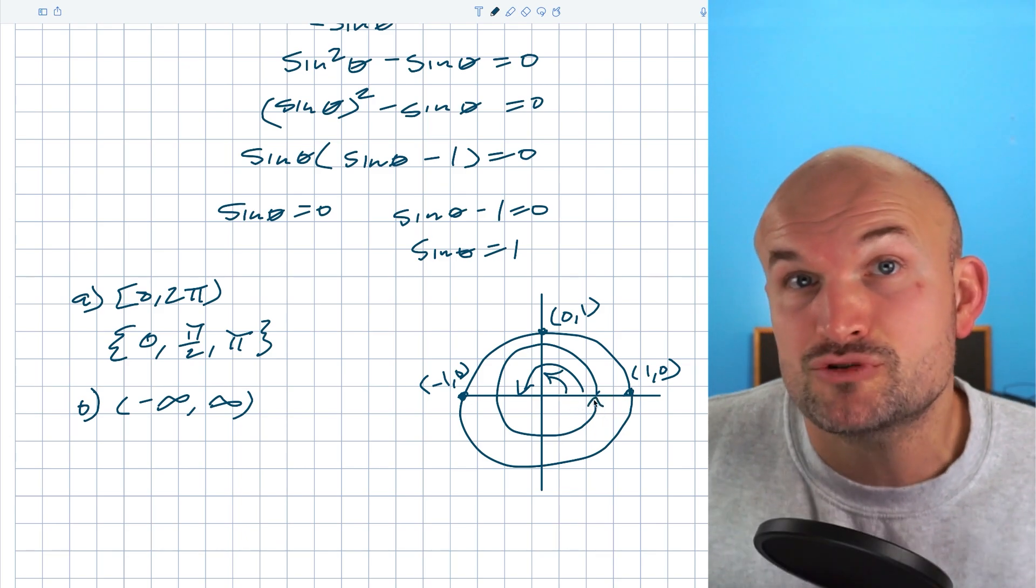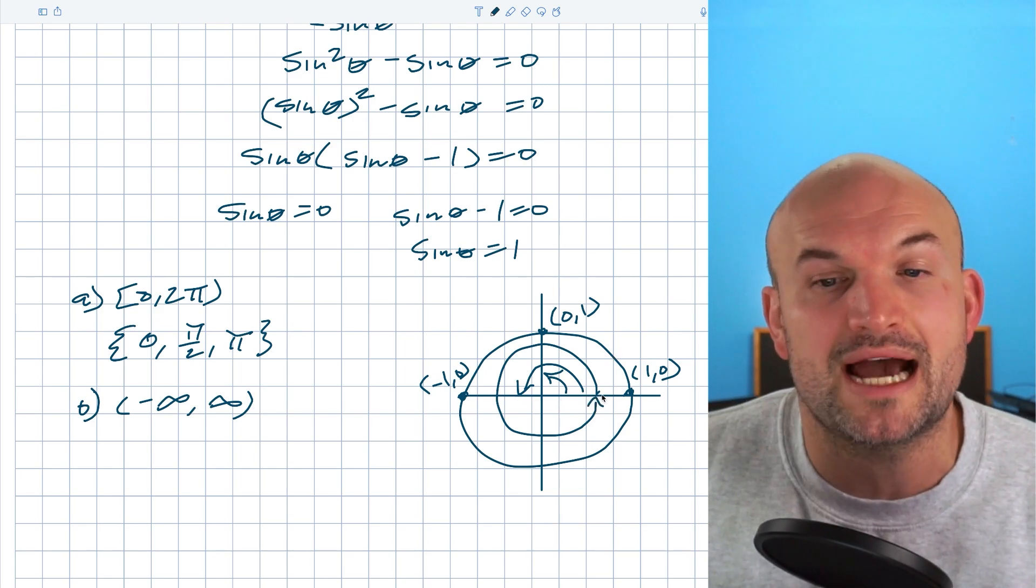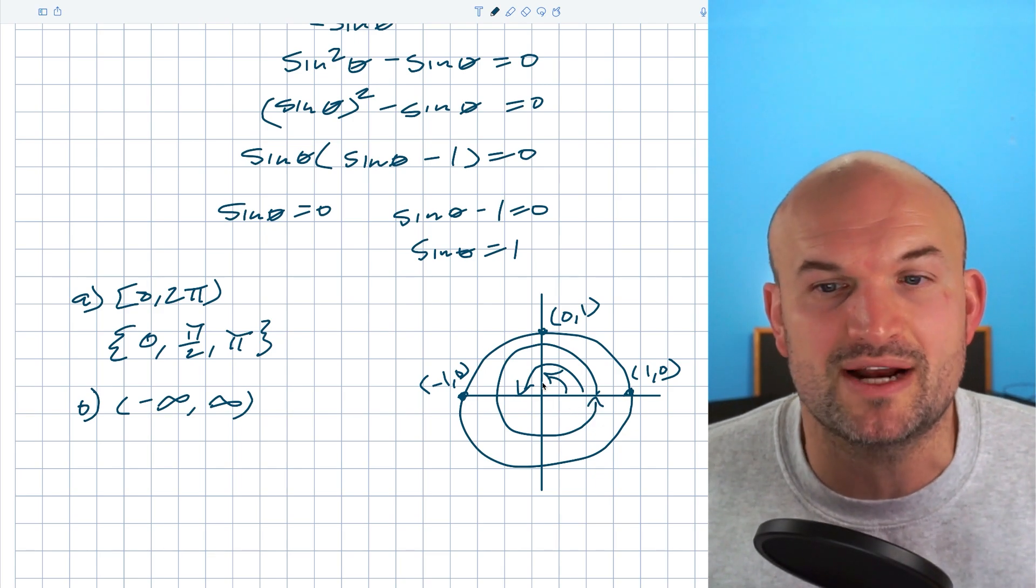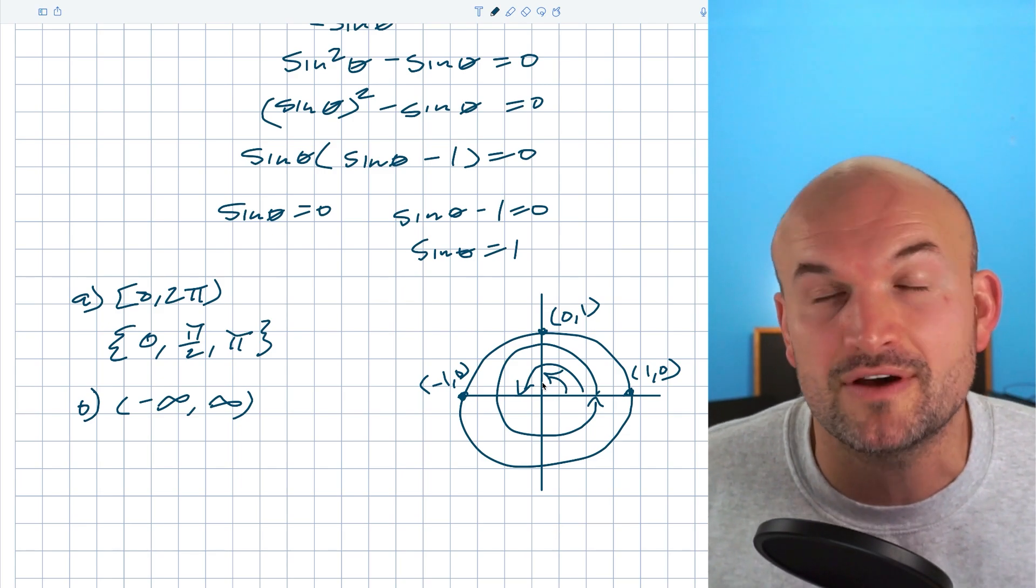You can also go in the negative direction subtracting two pi. If I did sine of negative two pi, which would be in the negative direction, I would still get zero. So therefore to write all of the intervals I could just write zero plus two pi n where n represents a positive or a negative number.